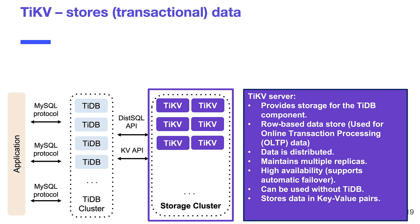Speaking of storage, the TiKV server provides storage for the TiDB server component. It's a row-based data store used for online transaction processing (OLTP). The data is distributed across multiple nodes and maintains multiple replicas — by default, three replicas of the data are stored. TiDB also supports high availability and automatic failover. Surprisingly, TiKV stores data in key-value pairs — that's where the KV comes from.